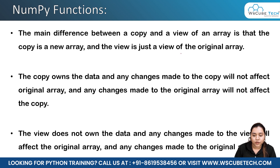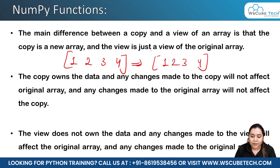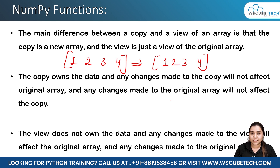The main difference between copy and view of an array is that the copy is a new array. For example, if you have an array with values like one, two, three, four, the copy will be an exact copy of this array, while the view will be the view of the original array.